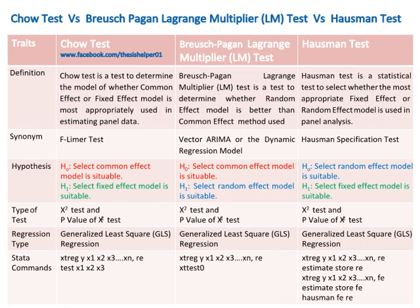The alternative hypothesis of the Chow test is: select the fixed effect model is suitable. The null hypothesis of the Breusch-Pagan Lagrange Multiplier (LM) test is: select the common effect model is suitable. The alternative hypothesis of the Breusch-Pagan LM test is: select the random effect model is suitable. The null hypothesis of the Hausman test is: select the random effect model is suitable. The alternative hypothesis of the Hausman test is: select the fixed effect model is suitable. The type of test used for all three is the chi-square test and p-value of the chi-square test.